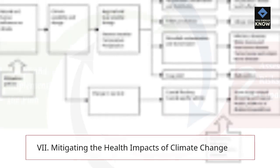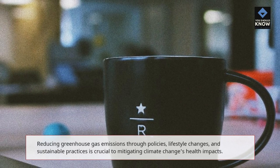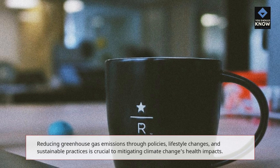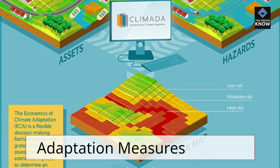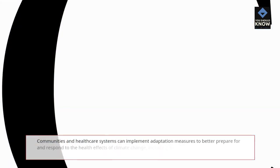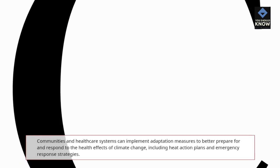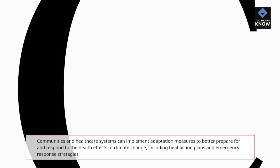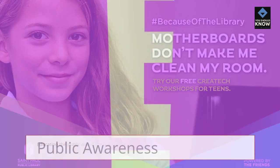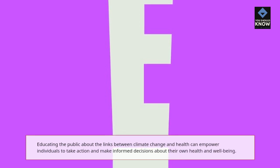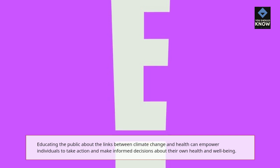Mitigating the health impacts of climate change. Mitigation strategies: reducing greenhouse gas emissions through policies, lifestyle changes, and sustainable practices is crucial to mitigating climate change's health impacts. Adaptation measures: communities and health care systems can implement adaptation measures to better prepare for and respond to the health effects of climate change, including heat action plans and emergency response strategies. Public awareness: educating the public about the links between climate change and health can empower individuals to take action and make informed decisions about their own health and well-being.